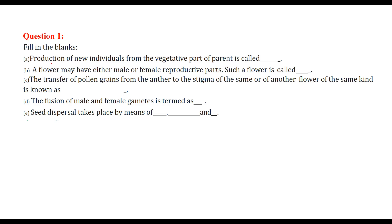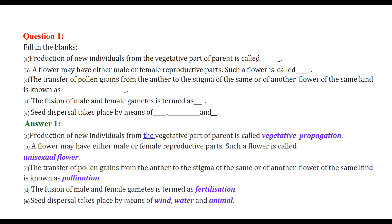First, fill in the blanks. Production of new individuals from the vegetative part of a parent is called vegetative propagation. A flower may have either male or female reproductive parts — such a flower is called a unisexual flower. The transfer of pollen grain from the anther to the stigma of another flower of the same kind is known as pollination. The fusion of male and female gametes is termed as fertilization. Seed dispersal takes place by means of wind, water, and animals.